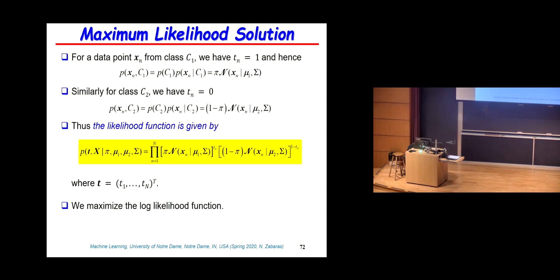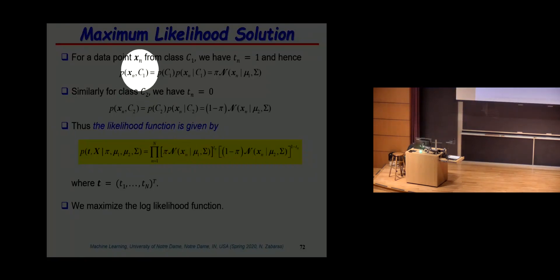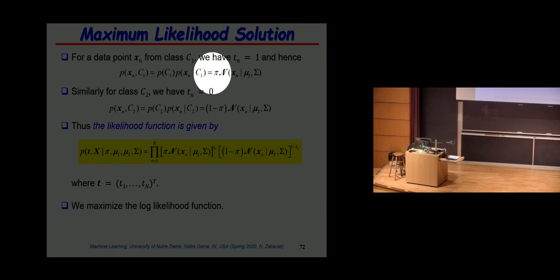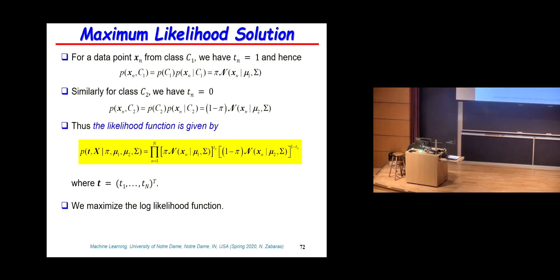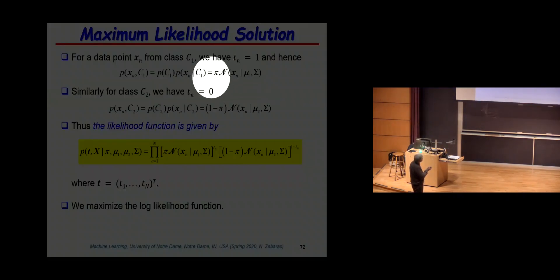Pay attention to how the calculations are done — the idea is universal and can be applied to much more complex cases. The joint probability of x_n and being in class C1 is pi times the Gaussian for class 1. You first have to be in class 1 with probability pi, and then the probability of x_n is given by that Gaussian. Similarly for class C2, the prior is 1 minus pi times the second Gaussian.